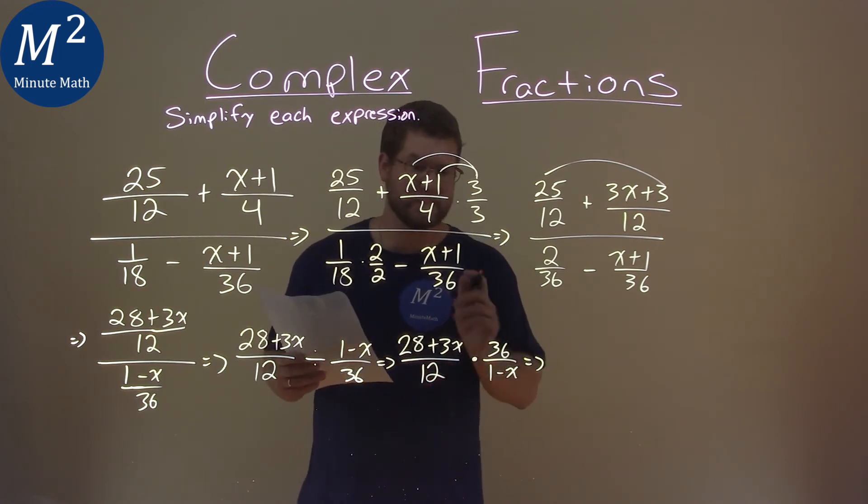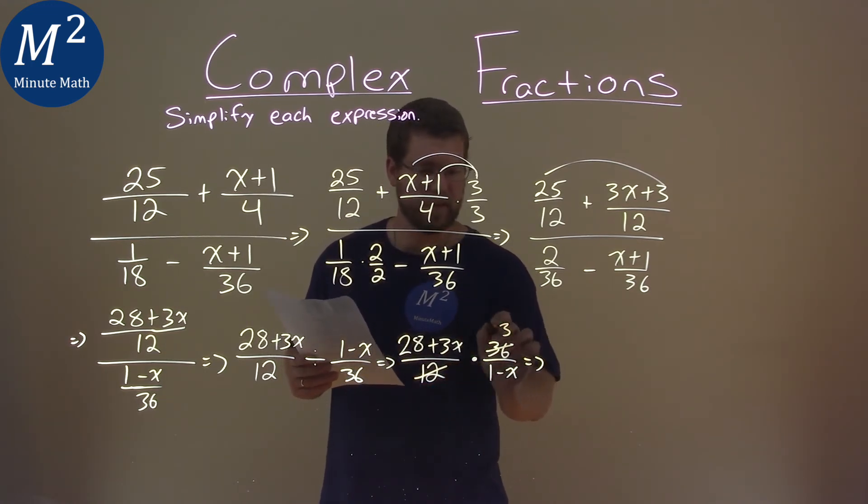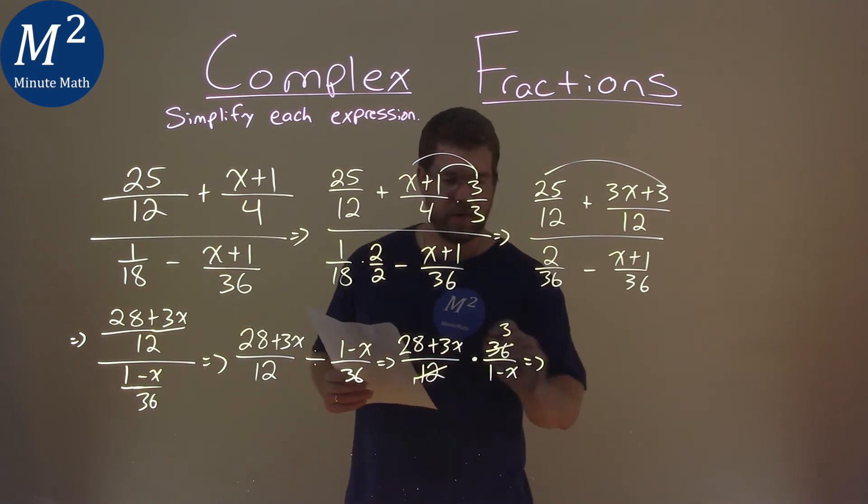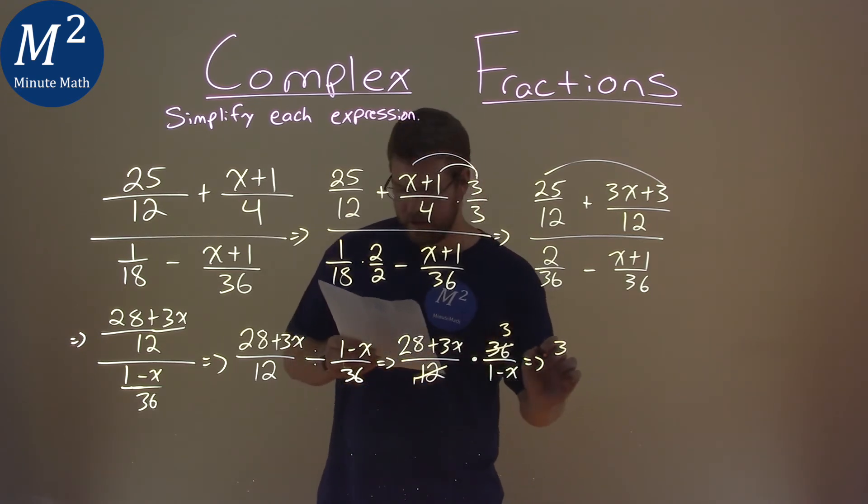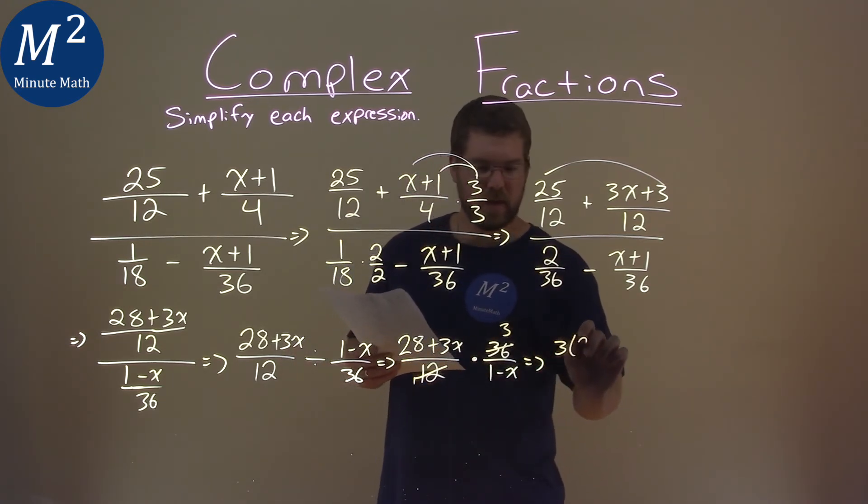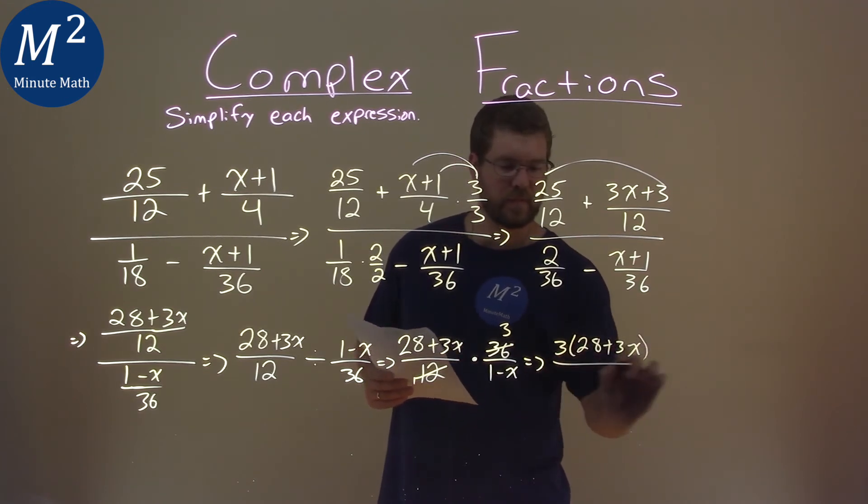So 12 goes into 36 three times right here. So now I'm writing this out. We have 3 multiplied by 28 plus 3x over 1 minus x.